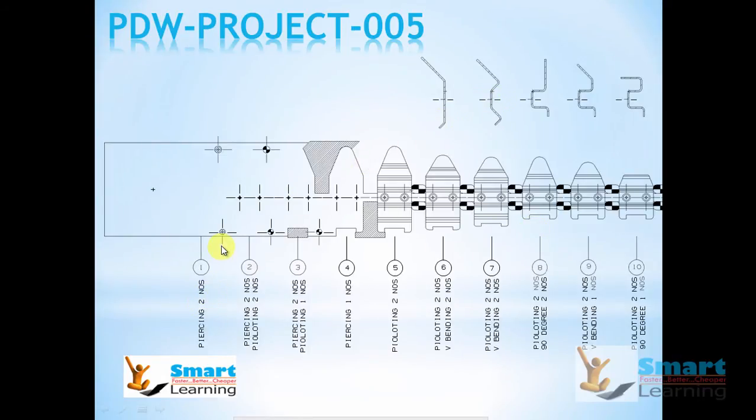In first station we have two piercing and in next station we will be doing two piloting and a small piercing. We will be putting two piercing holes and like that in station 3 and 4 we will be doing piloting and piercing. In 5th station we will be idle.